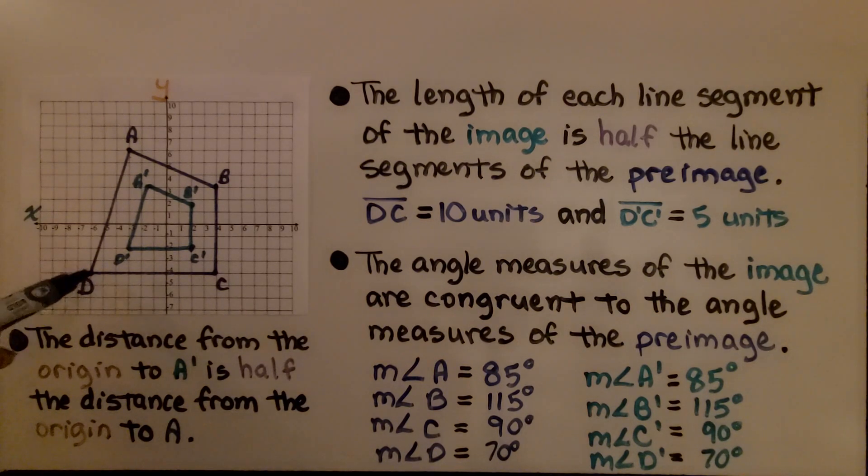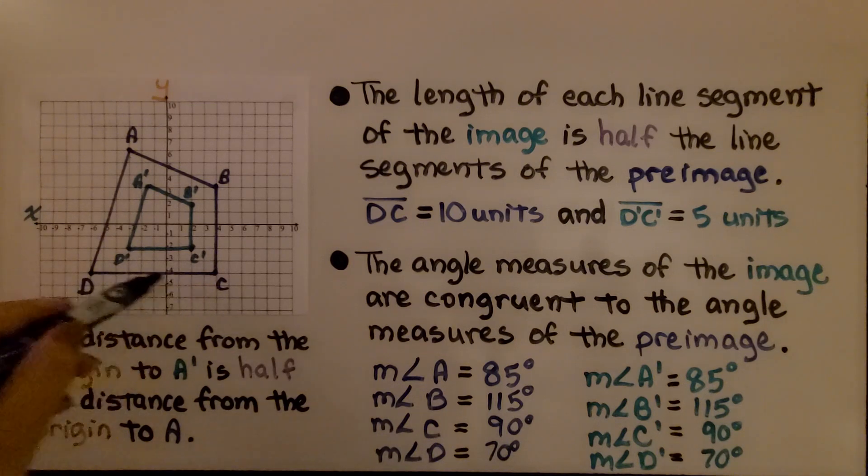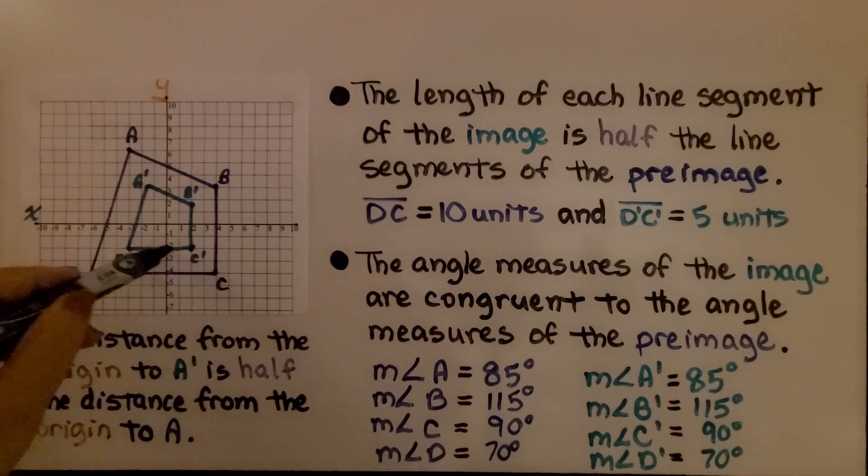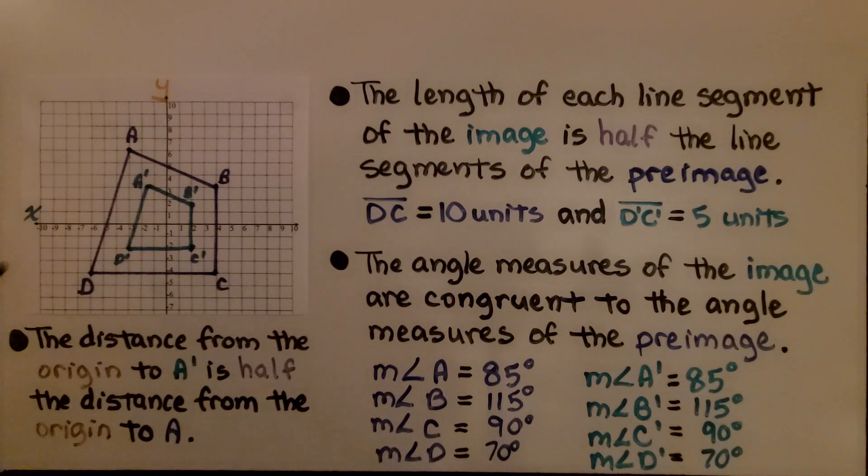The length of each line segment of the image is half the length of the line segments of the preimage. We have line segment DC. This is 10 units in length. And D prime C prime is 5 units. That's half.